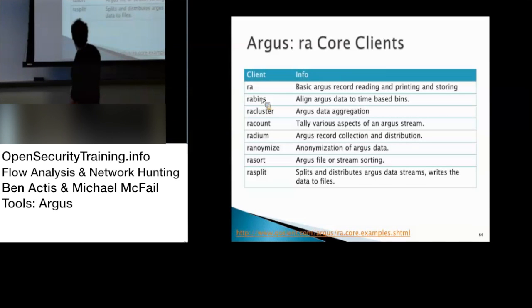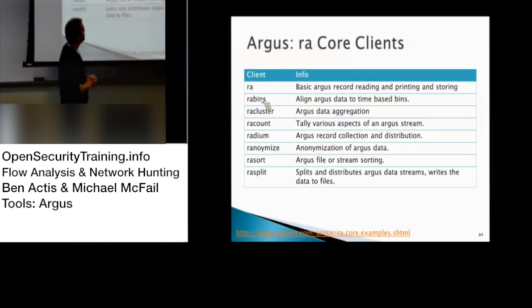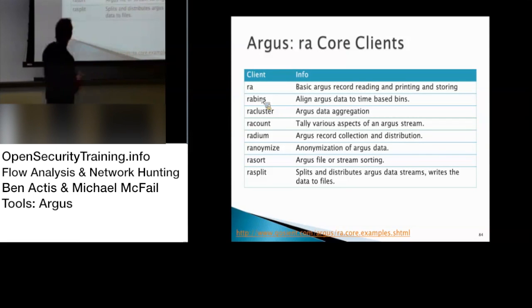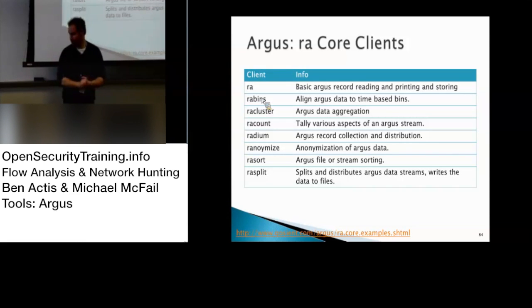Argos consists of a few sub-programs. RA — basic Argos record reading, printing, storing — same thing as Rwcut, essentially. You also have RA bins, so you can align Argos data into time-based bins, again very similar to Silk.